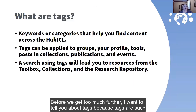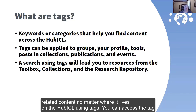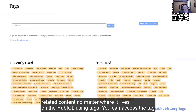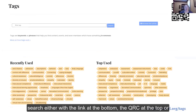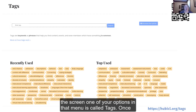Before we get too much further, I want to tell you about tags, because tags are such a useful function to find things on a theme. You can search for related content no matter where it lives on the HubICL using tags. You can access the tag search either with the link at the bottom, the QR code at the top, or from inside the HubICL if you go to the Discover menu at the very top of the screen — one of your options in that menu is called Tags.